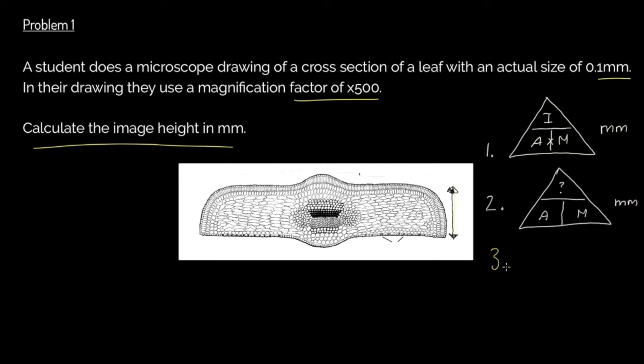So let's put our numbers in stage three. So this time, let's put our numbers again and remind ourselves we must have consistent units. Let's put some numbers in. What have we got here? Well, we've got an actual size of 0.1 millimeters. And we've got a magnification, of course, of 500. But we don't have our image size.